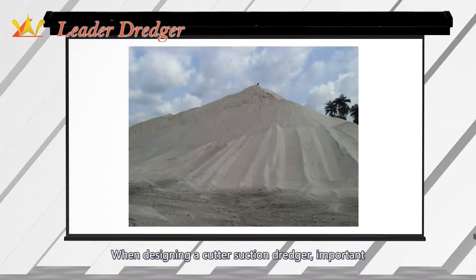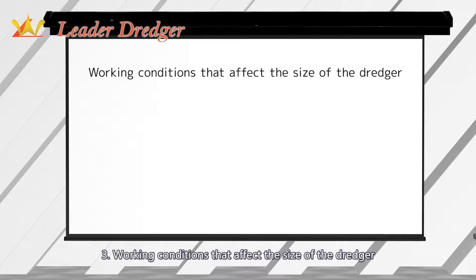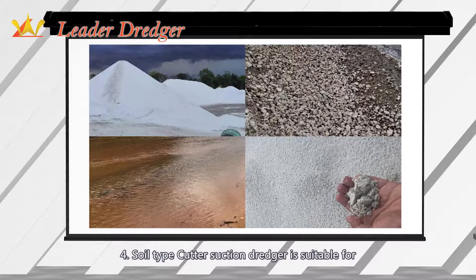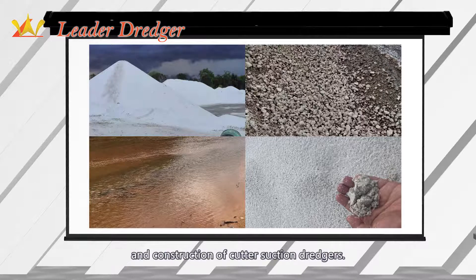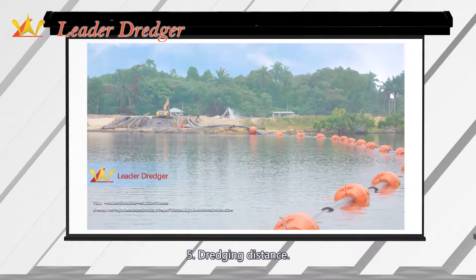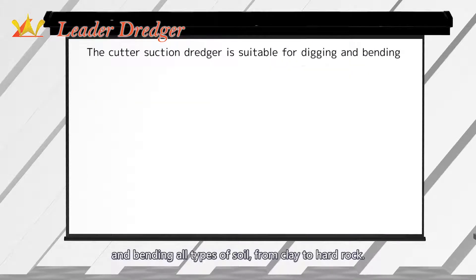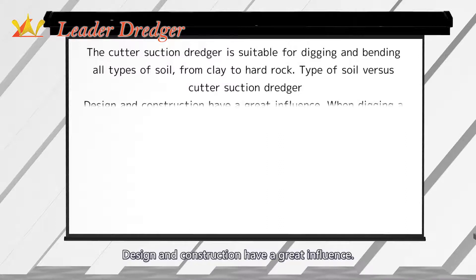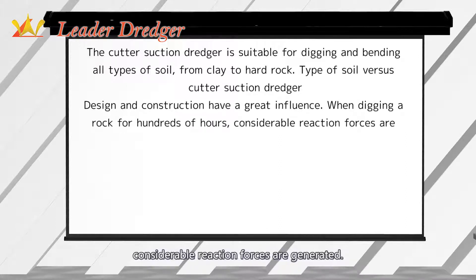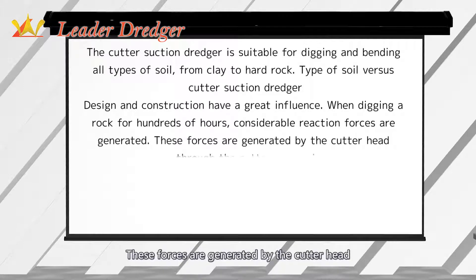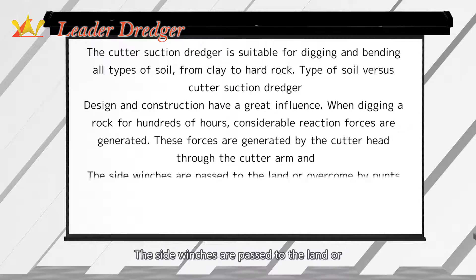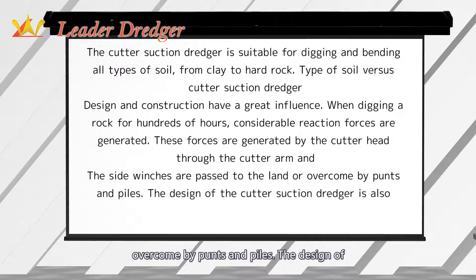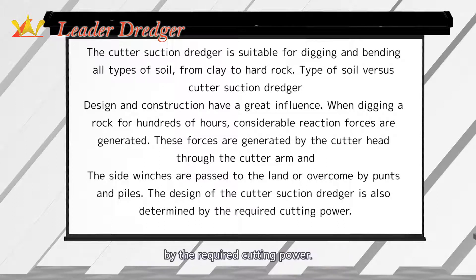When designing a cutter suction dredger, important parameters include: 1. Production volume; 2. Dredging depth; 3. Working conditions that affect the size of the dredger; 4. Soil type — the dredger is suitable for digging various types of soil from clay to hard rock, and soil type has a great influence on design and construction; 5. Dredging distance. When digging rock for hundreds of hours, considerable reaction forces are generated through the cutter head and cutter arm, and are passed to the land via side winches or overcome by punts and piles. The design is also determined by the required cutting power.